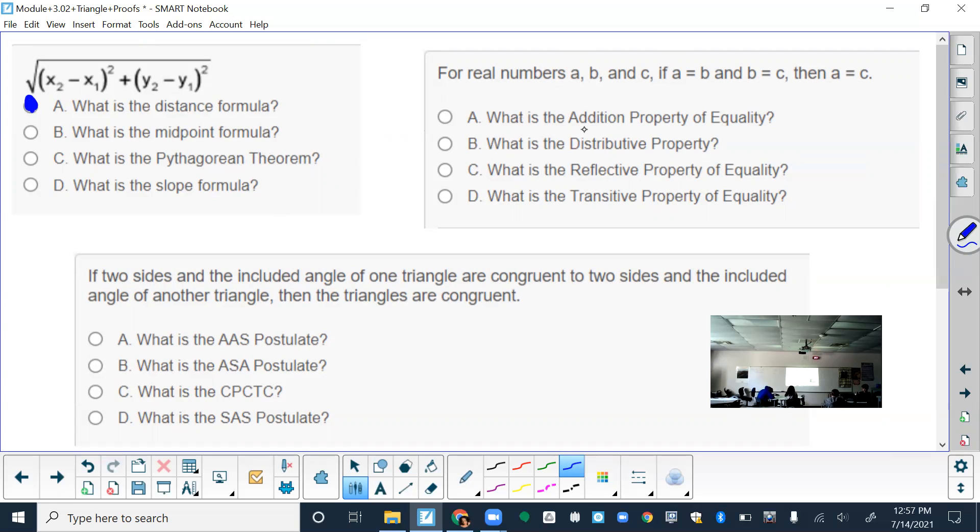This one you might not know, but for real numbers A, B, and C. If A is equal to B and B is equal to C, then A is equal to C. That one is the transitive property. We haven't talked about that one really.